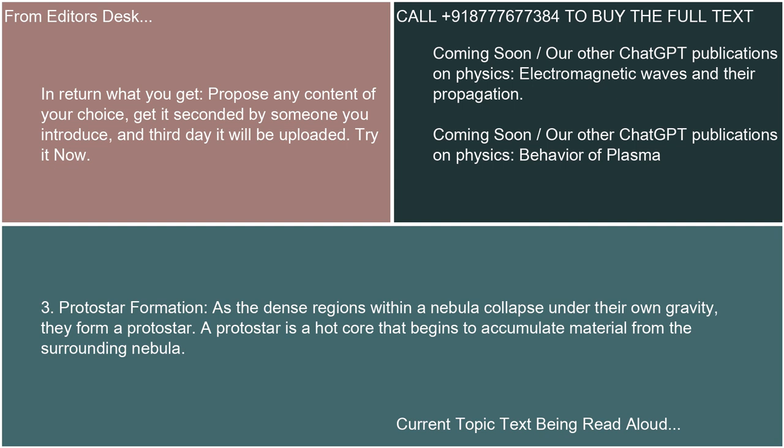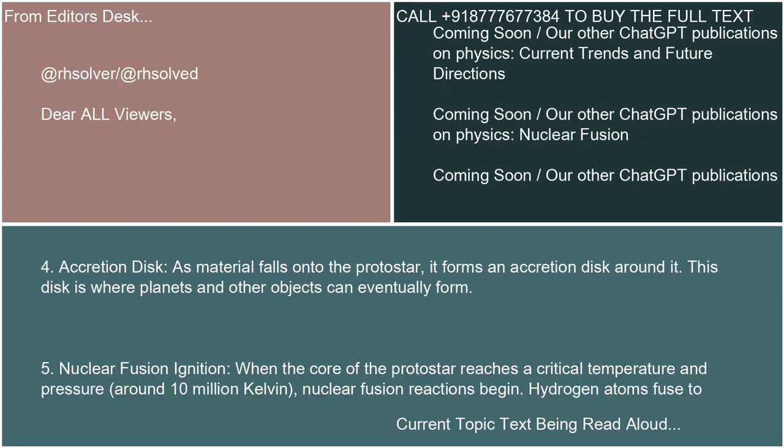Protostar Formation: As the dense regions within a nebula collapse under their own gravity, they form a protostar — a hot core that begins to accumulate material from the surrounding nebula. Accretion Disc: As material falls onto the protostar, it forms an accretion disc around it. This disc is where planets and other objects can eventually form.